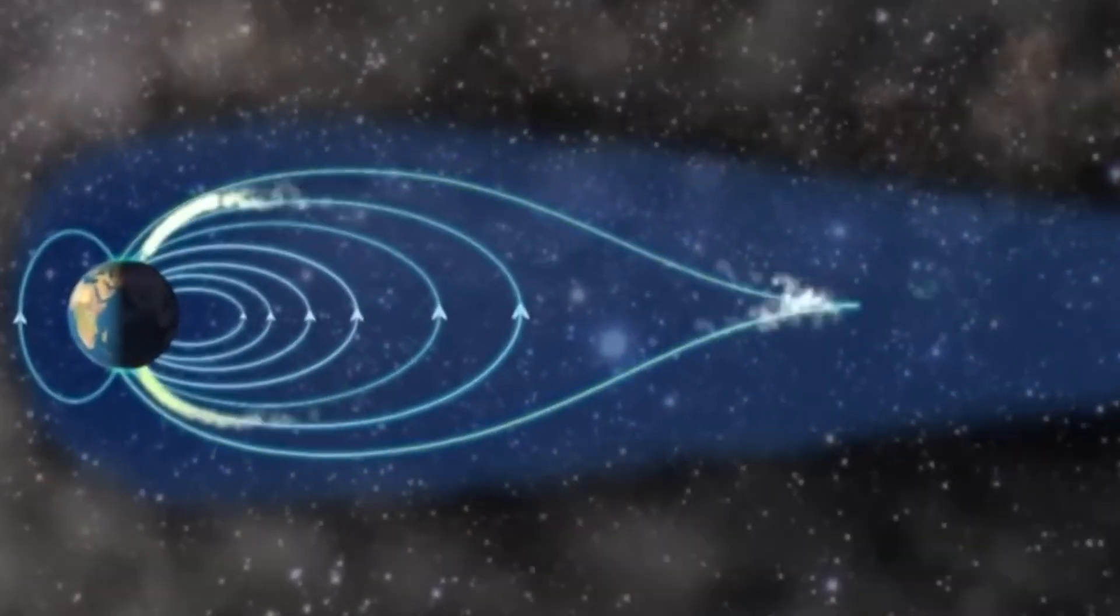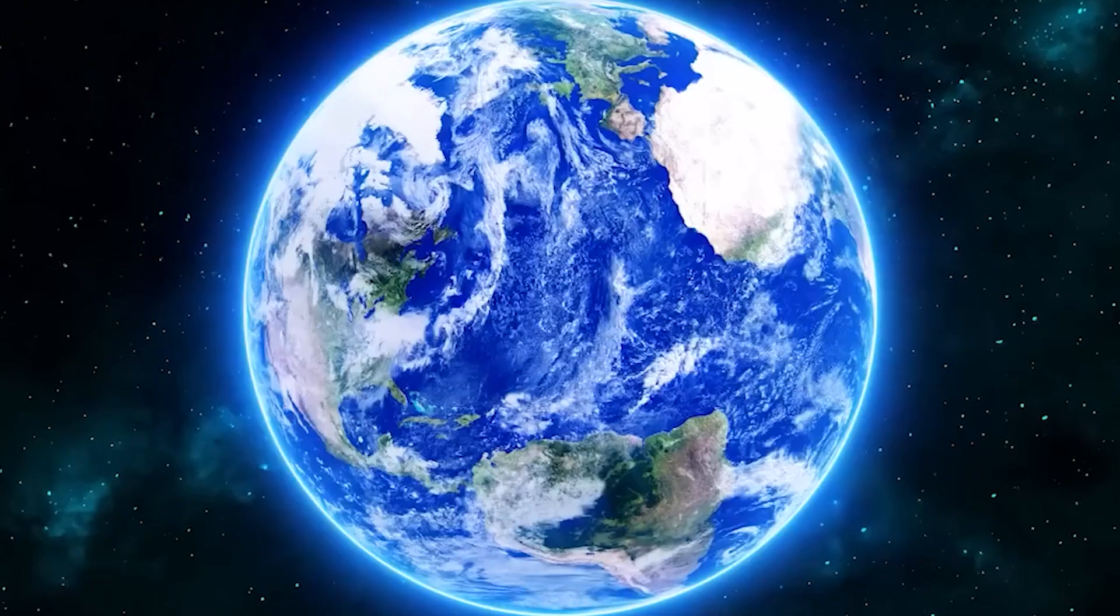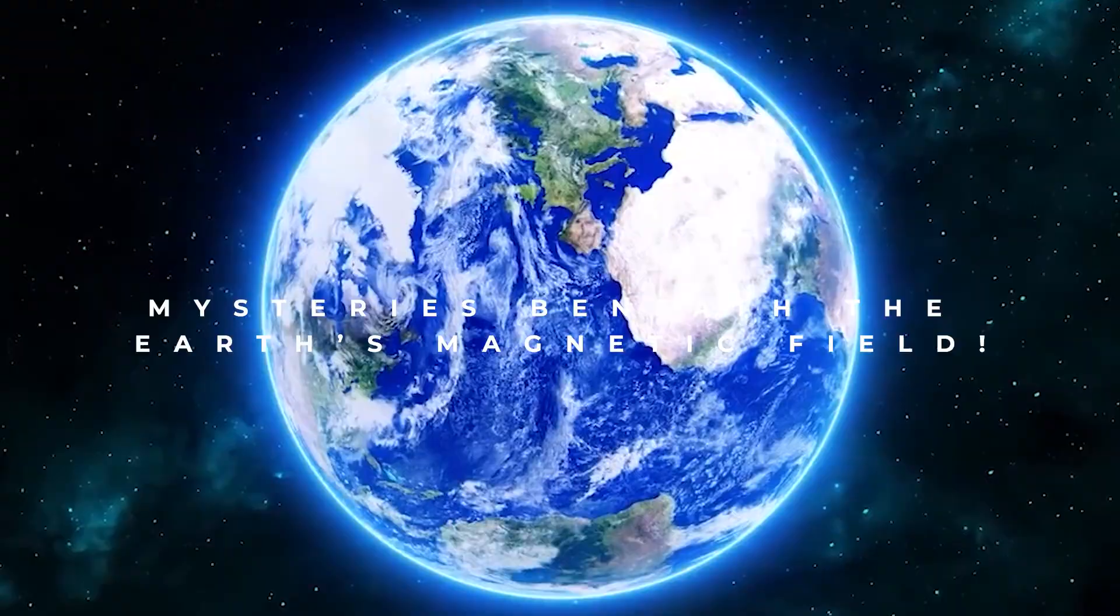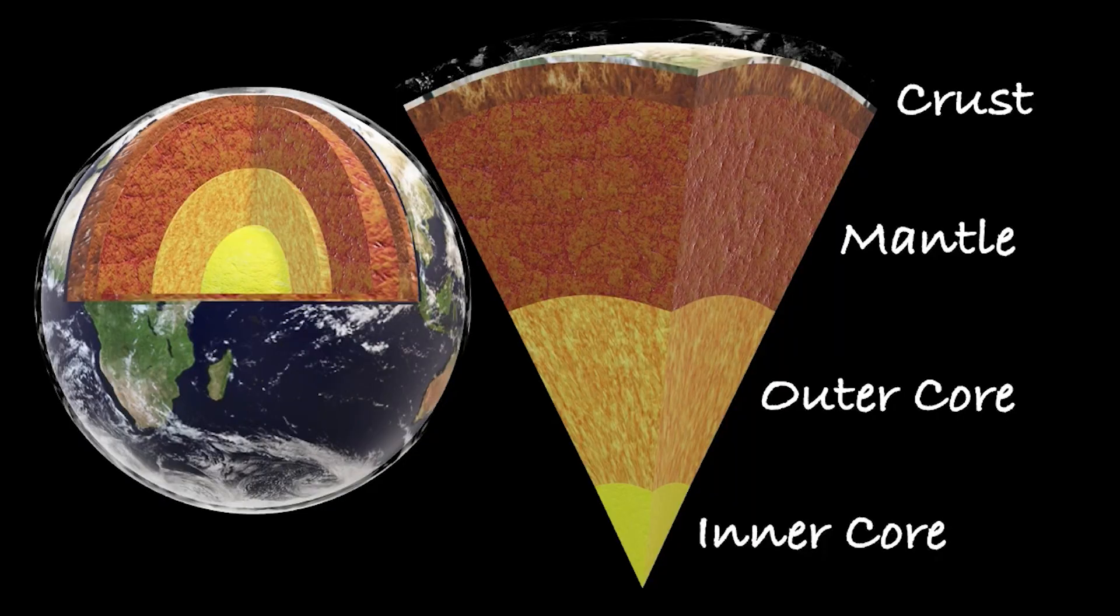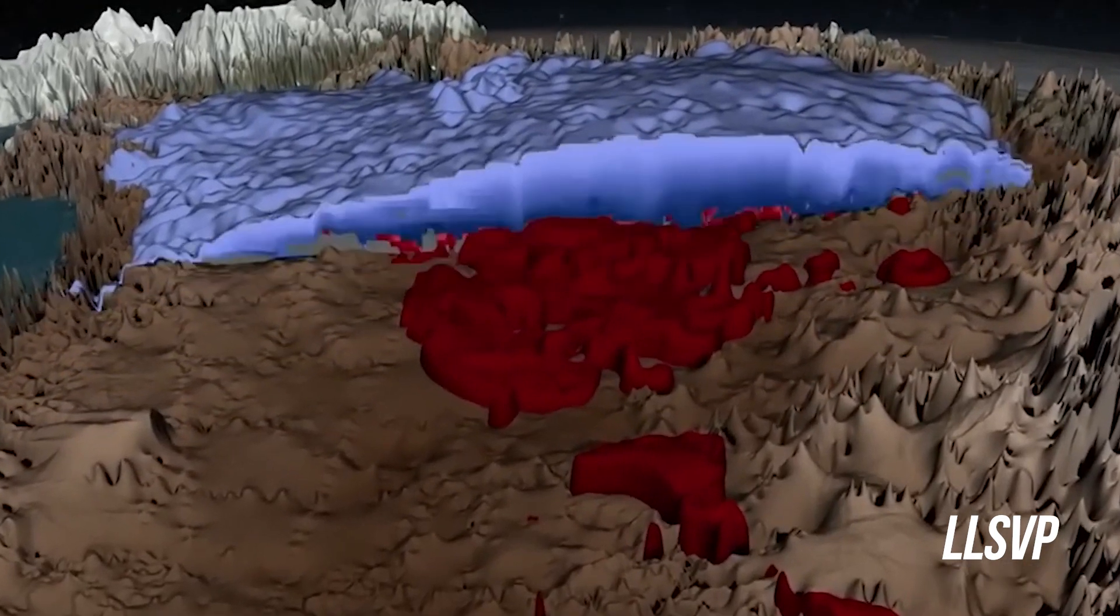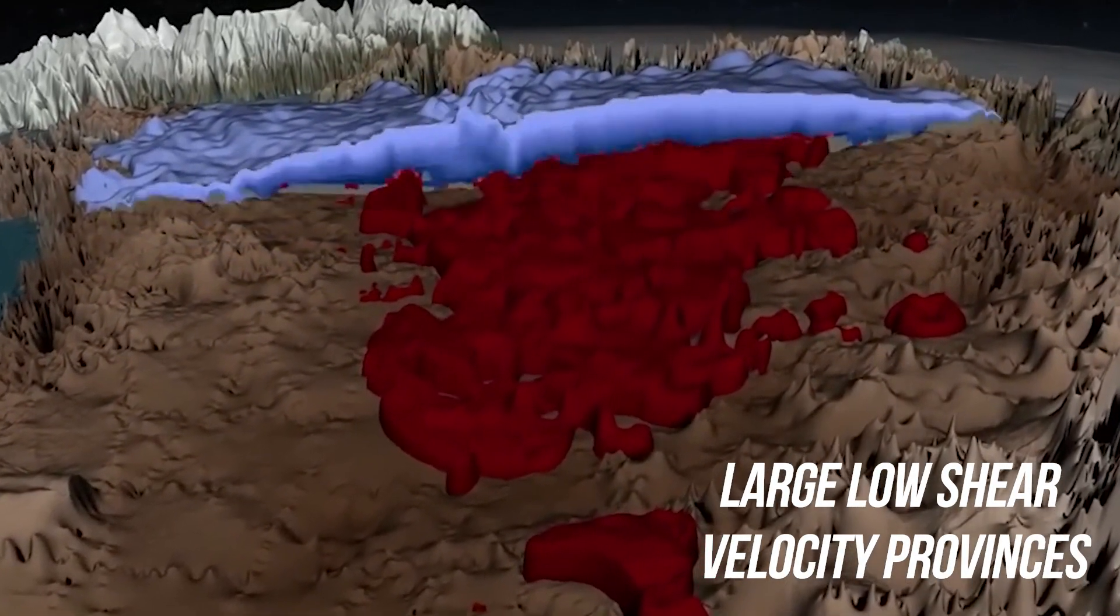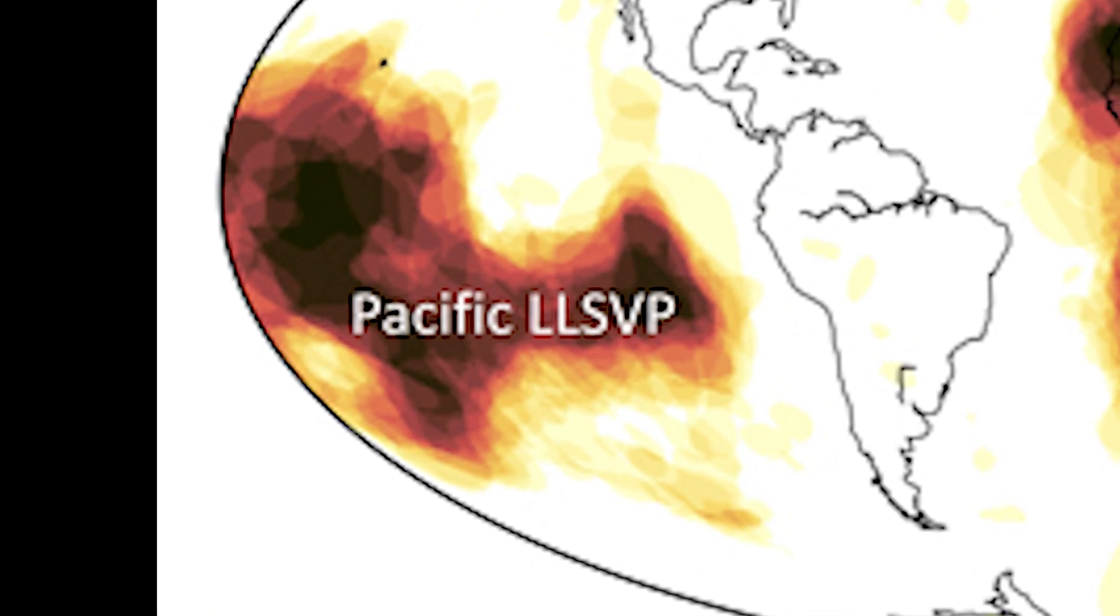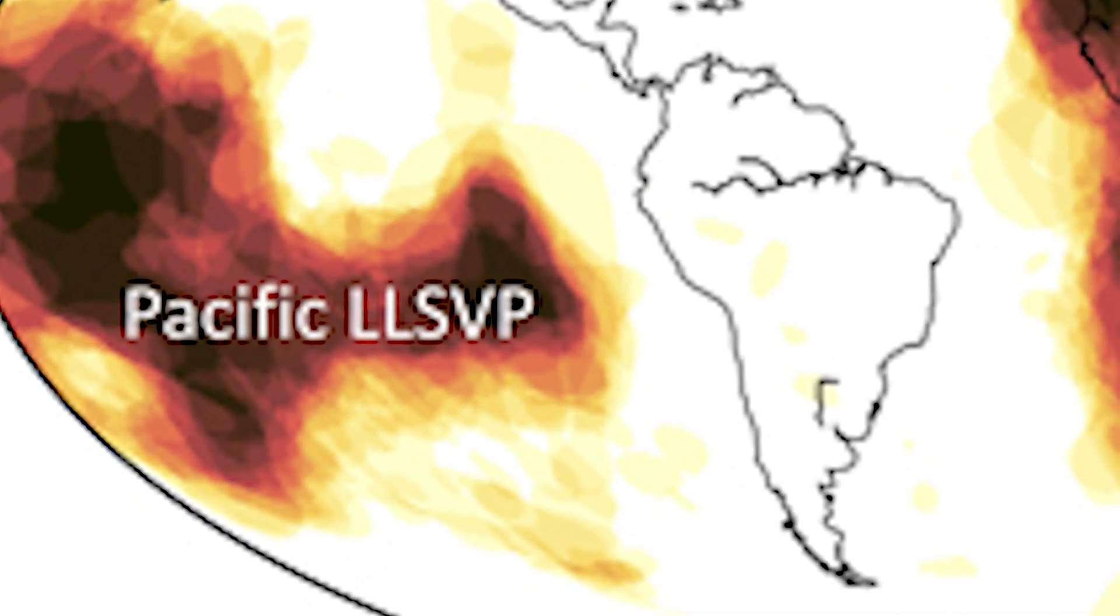Well, the answer may lie deep within our Earth's mysterious magnetic field. Now, imagine these massive structures hidden beneath the Earth's surface, between the mantle and the outer core. They're called LLSVPs, or Large Low Shear Velocity Provinces. And there are two of them, the African LLSVP and the Pacific LLSVP.